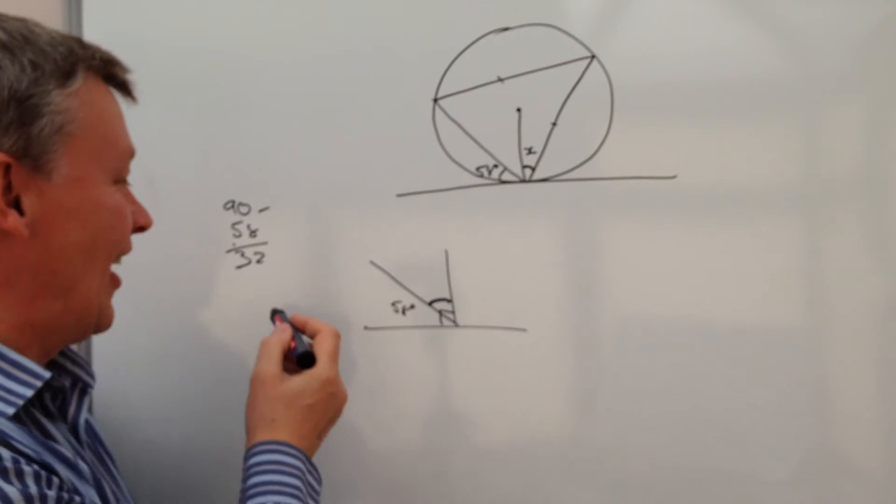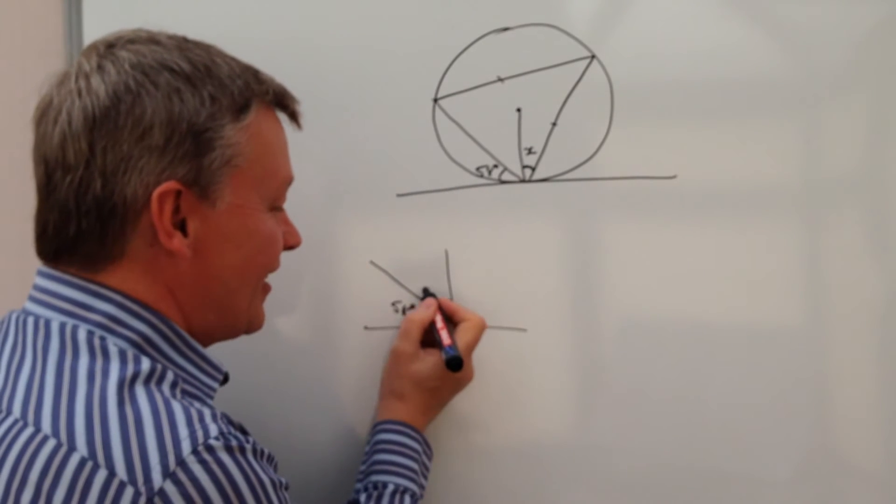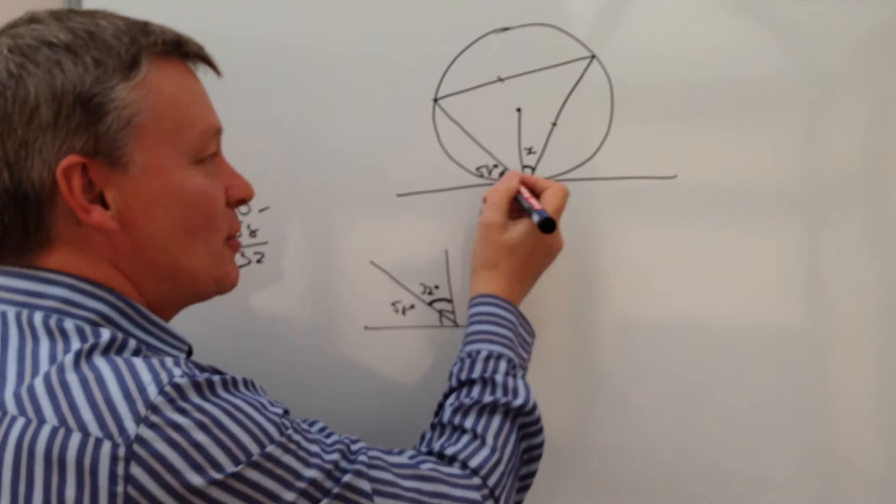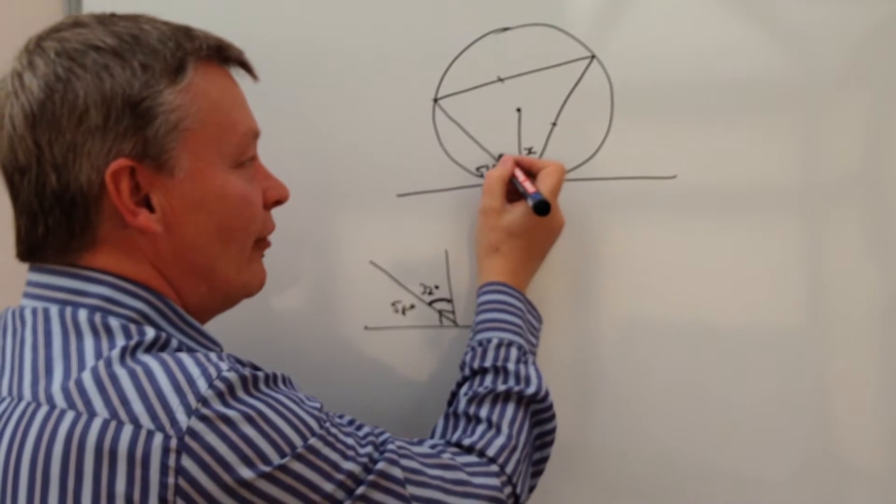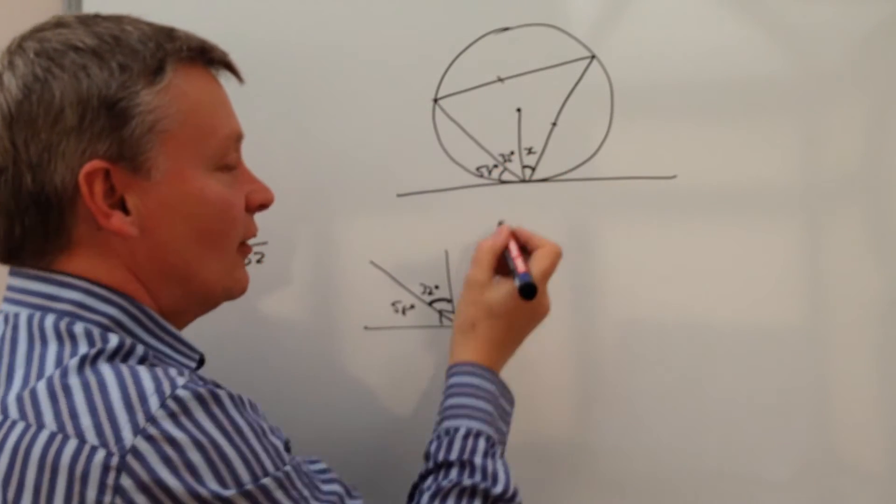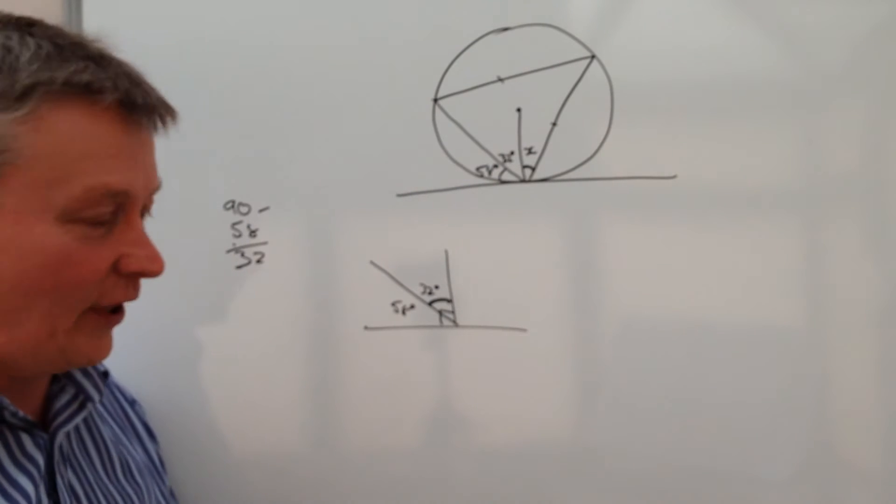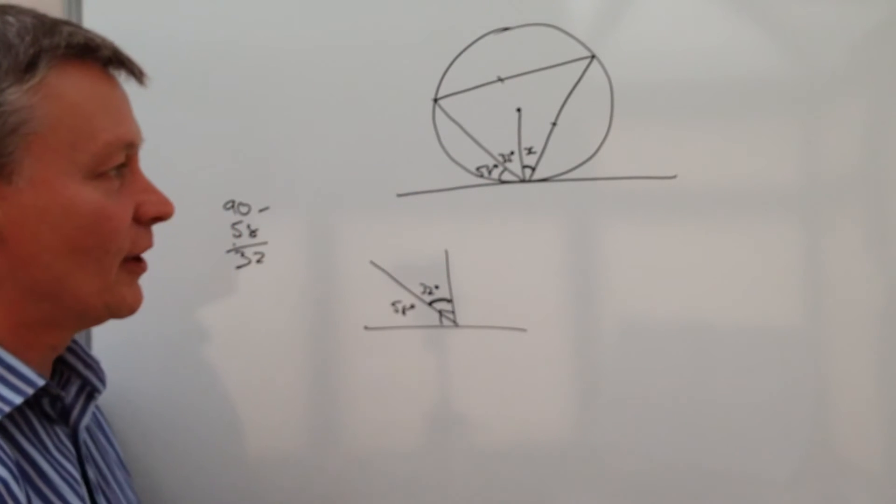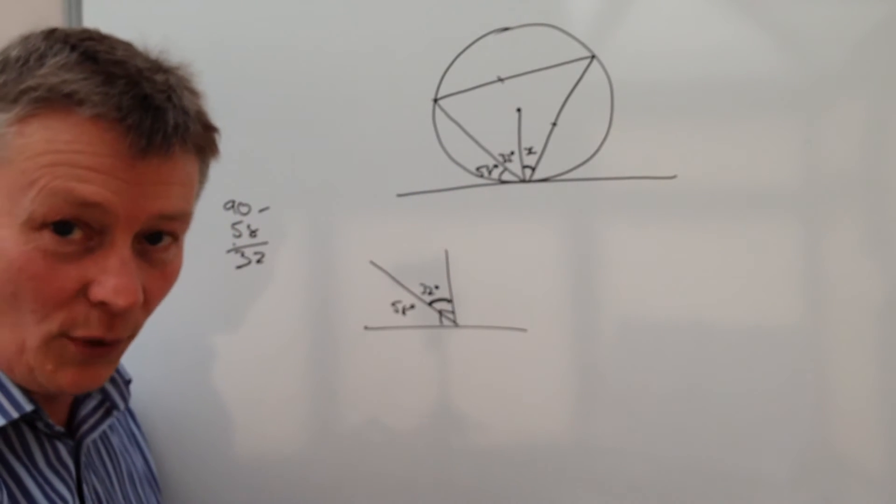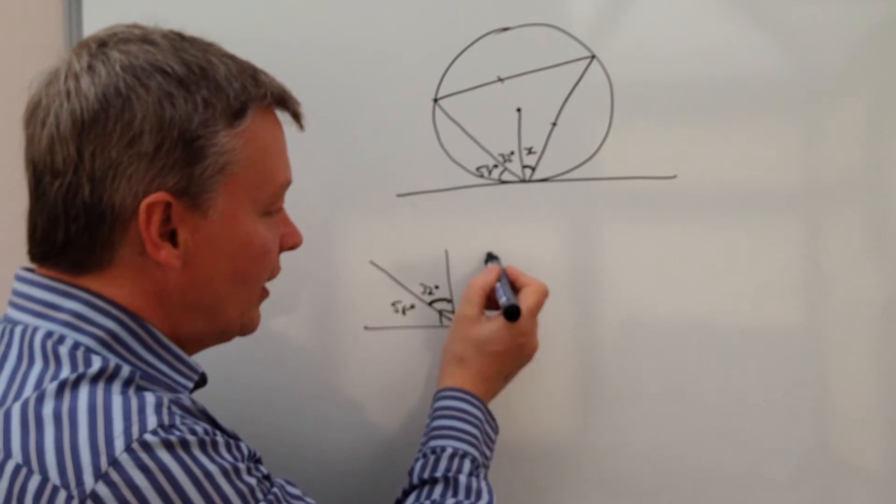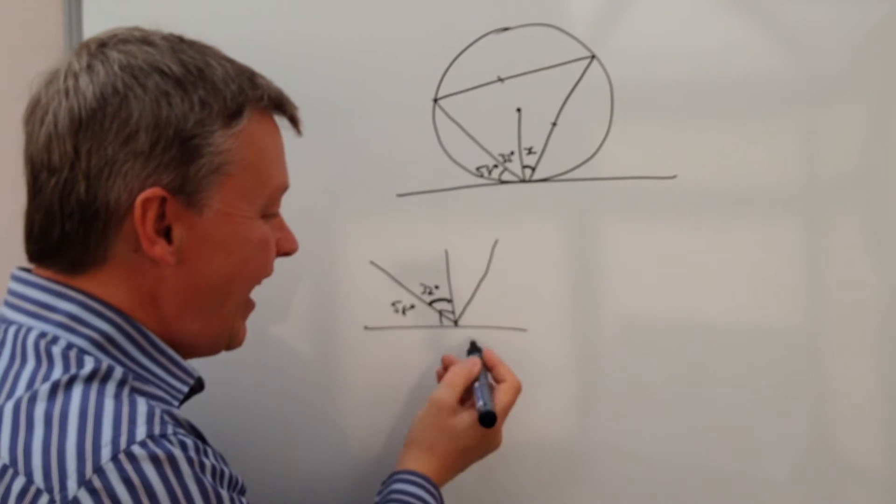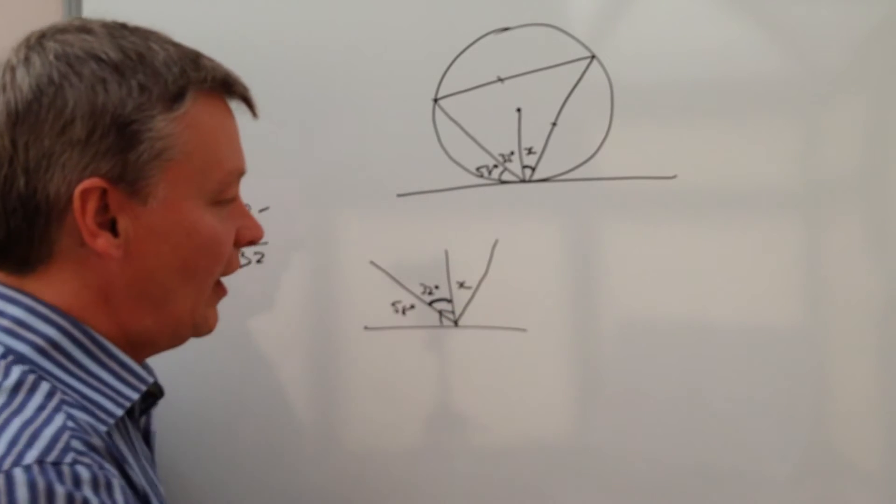So that's 32 degrees, which means that we've now got a bit more information that this angle here is 32 degrees. So we're starting to build up a little bit of a picture because what we want now is to work out the value of X here.